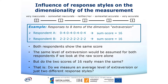Here is an example of how response styles can influence the dimensionality of measurement. Let's assume we have a five-point rating scale and eight items measuring extraversion. Respondent A gives only extreme responses — either zero or four — while Respondent B gives only midpoint responses. Both respondents show the same raw score of 16, implying the same level of extraversion. But the question is: do we really measure the same thing with these two scores? Or are we just measuring two different kinds of response styles — an extreme response style and a midpoint response style?